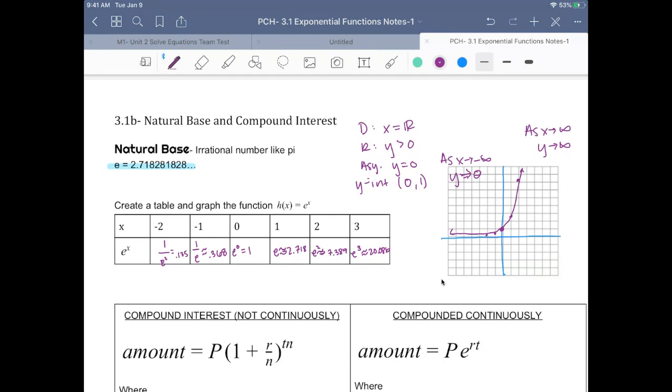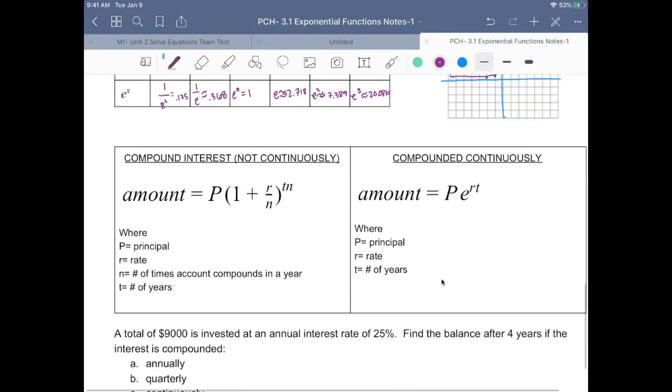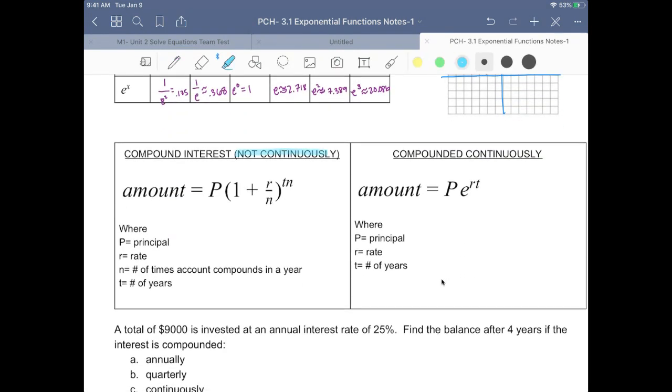So the other thing that we learned about today was compound interest. There are two types of compound interest. The type where you are not compounding continuously. This would be annually, biannually, monthly, quarterly, daily.